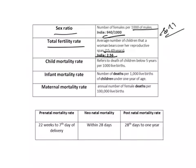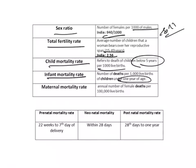The next term is child mortality rate, which refers to the death of children below 5 years per thousand live births. Infant mortality rate refers to the deaths of infants under the age of 1 year per thousand live births. Infant mortality rate includes prenatal mortality rate, neonatal mortality rate, and post-neonatal mortality rate.